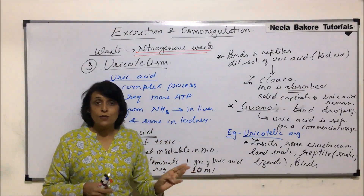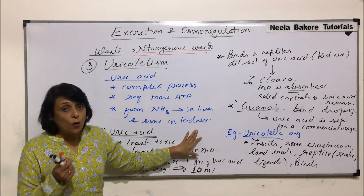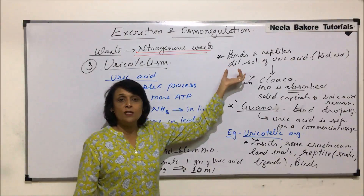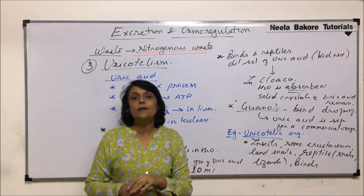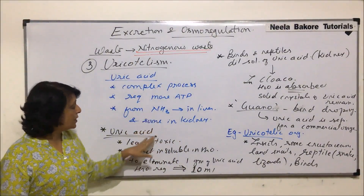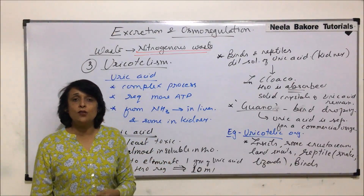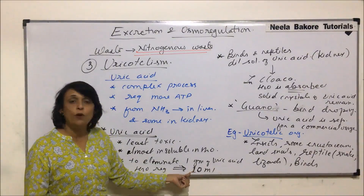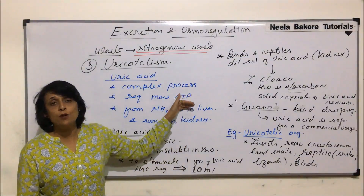Uric acid formation is a complex, highly energy-dependent process. Most of this uric acid formation takes place in the liver, but some is also formed in the kidney. Since the kidney can handle nitrogenous waste only in solution form, in birds and reptiles the dilute solution of uric acid formed is transferred to the cloaca, where all the water gets absorbed and only solid uric acid is eliminated. It is the least toxic of all three nitrogenous wastes, and very little water — only 10 milliliters per gram — is required for its elimination.